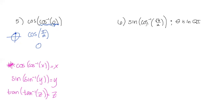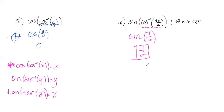Number 6: sine of cosine inverse of √3/2. Working from the inside out, cosine inverse of √3/2 asks what angle gives cosine equal to √3/2 — that's π/6. Replacing that, I now have sine of π/6, which equals one half. I only needed one solution here because the problem specifies theta is in quadrant 1.